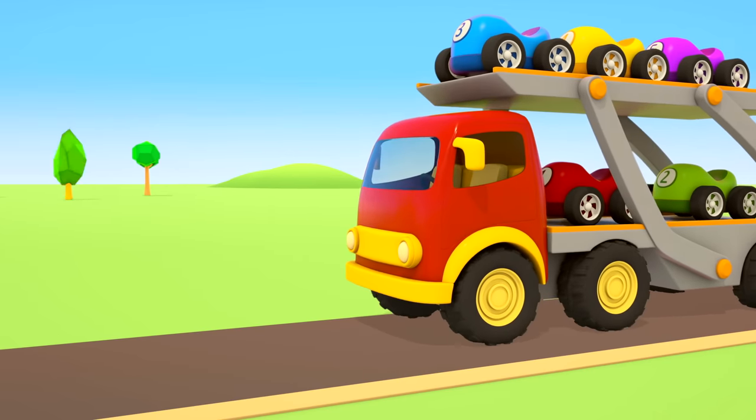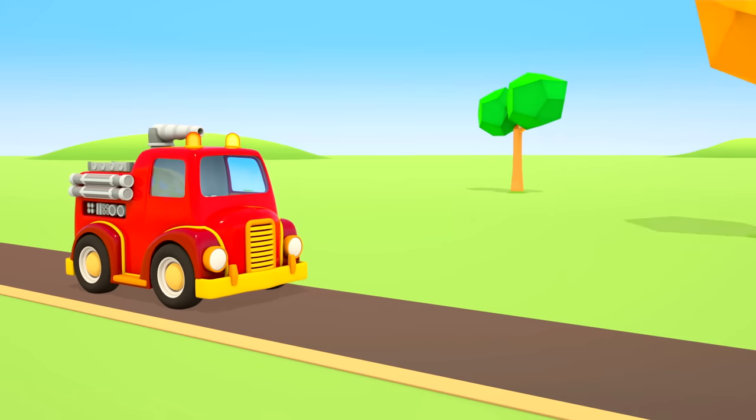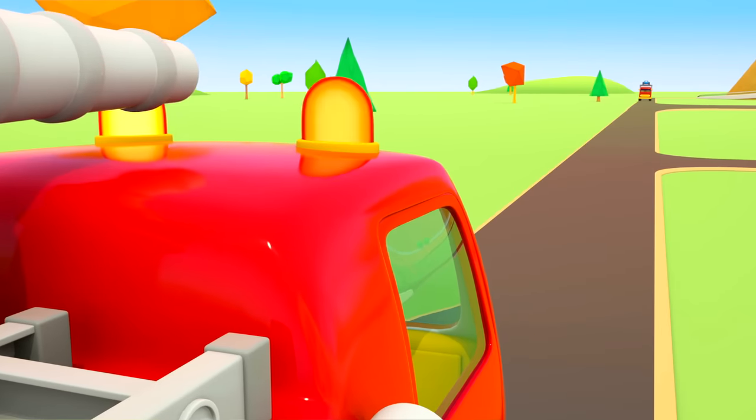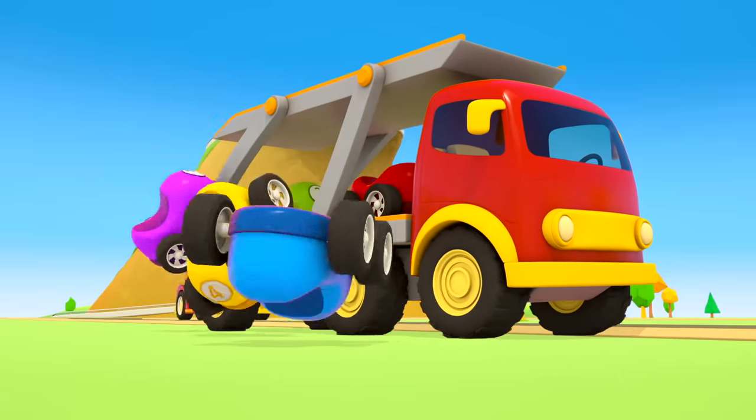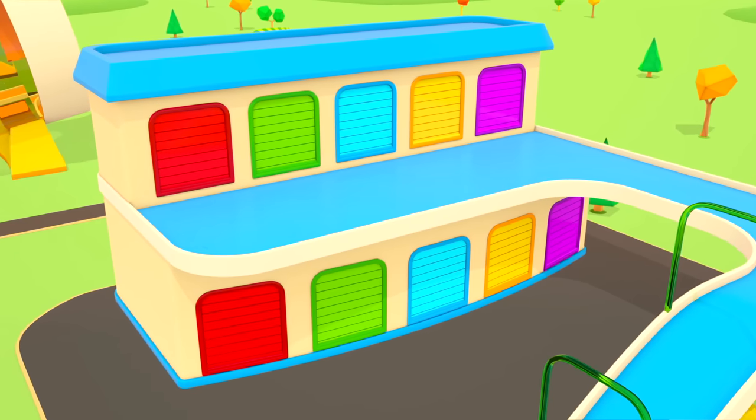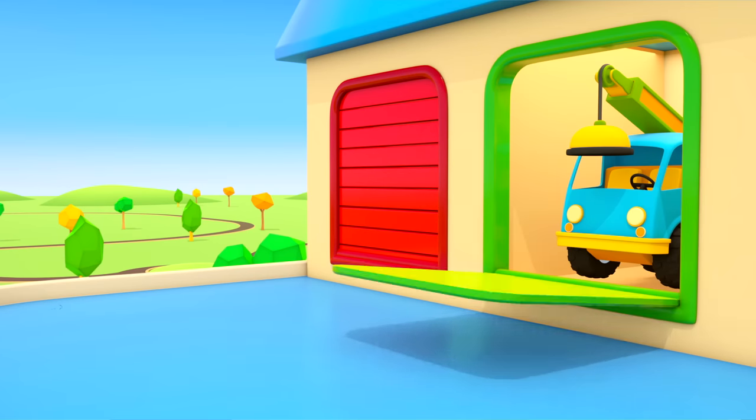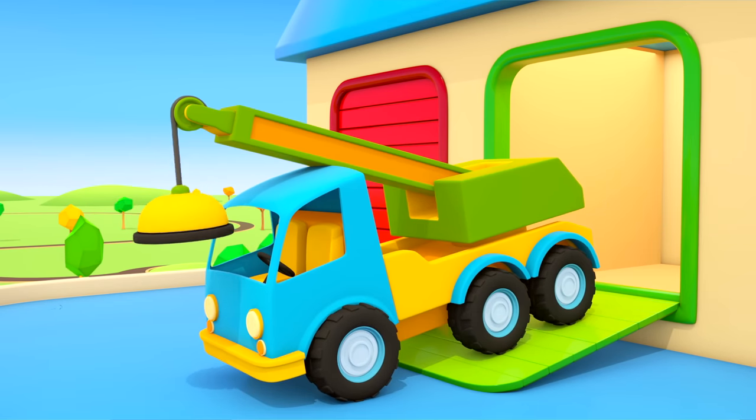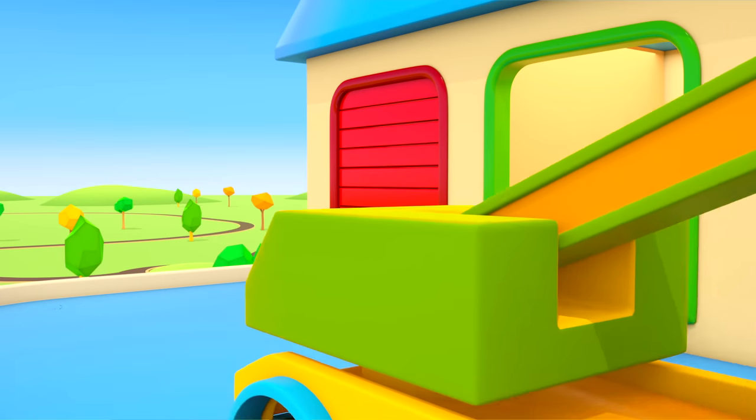The transporter with the cars is driving along the road. Look! A fire truck is driving very fast. There is a fire somewhere. Look out! Oh no! The cars fell off. Who will help them? Something's coming out of the big garage. It's a truck crane. He has a magnet on his arm. With this magnet, he can pick up the cars and put them back on the transporter.